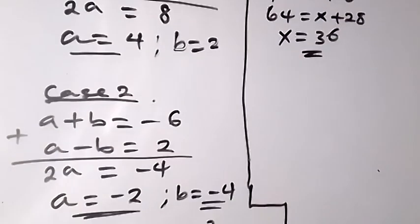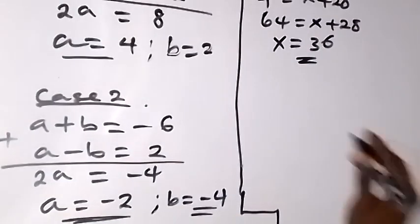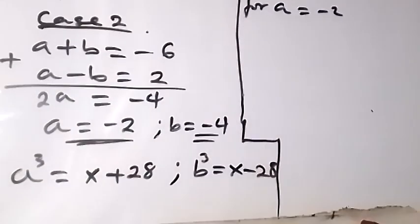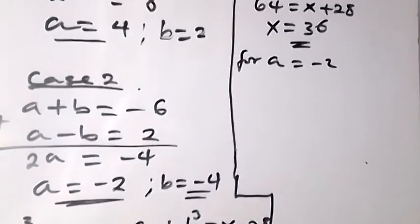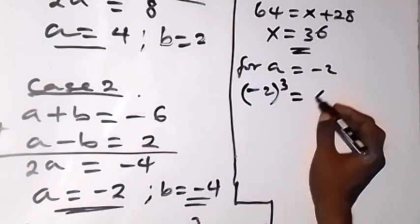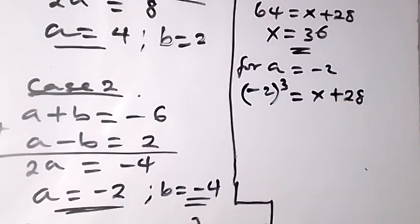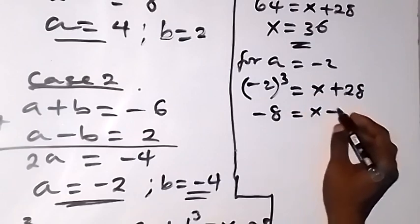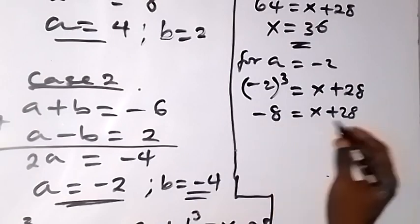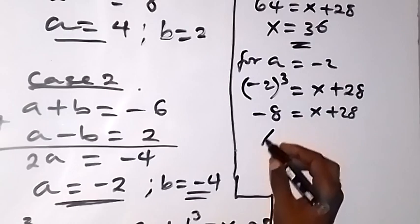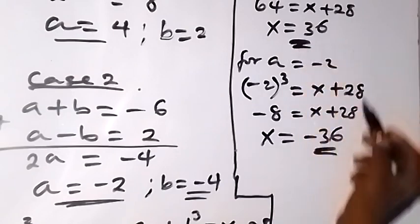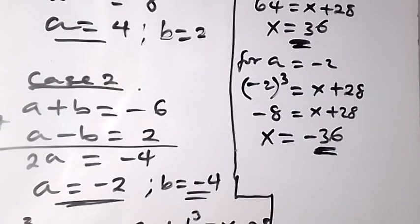And also, we got a to be minus 2. So when a is minus 2, we substitute minus 2 into the equation: a cubed equals x plus 28. We then have minus 2 raised to power 3 equals x plus 28. Minus 2 raised to power 3 is minus 8, and that equals x plus 28. Taking 28 to the other side: minus 8 minus 28 gives us minus 36. So x equals minus 36. We discover that if we do the same thing for b and substitute the two values of b, we still get x equals 36 and x equals minus 36. So this is the solution.